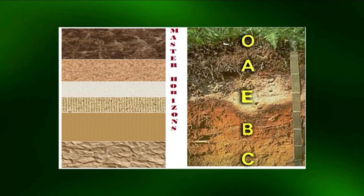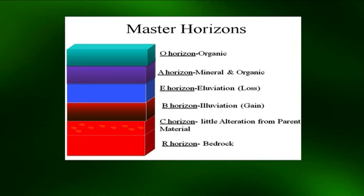Generally there are five to seven master horizons in the soil profile recognized in different soils. However, not all soil profiles contain all these horizons, and they differ from one location to another. The master horizons and their subdivisions represent layers which show evidence of change, and some layers which have not been changed.